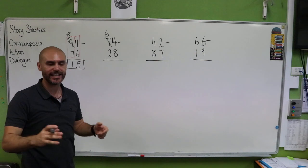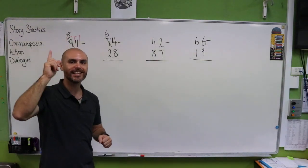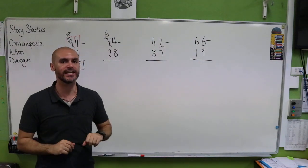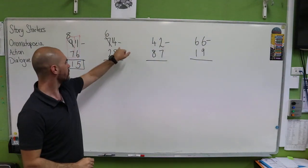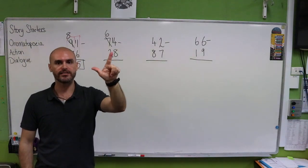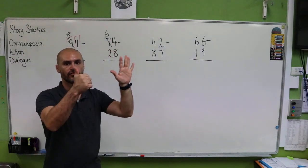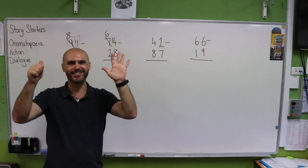So now we have 14 take away eight. So let's count up from eight and see how long it takes us to get to 14. How many numbers do we need to get from eight to 14? So we have eight, nine, 10, 11, 12, 13, 14. That's six.